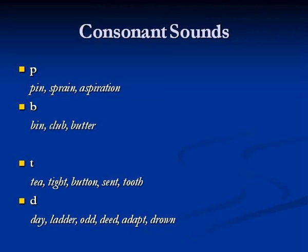Many consonants appear in pairs. Each pair is produced in the same place of the mouth with the tongue in the same position. For example, P and B — both are pronounced by putting your lips close together. The first one is pronounced from the mouth whereas the second from the throat. So P is voiceless and B is voiced. P as in pin, sprain, aspiration. B as in bin, club, butter.